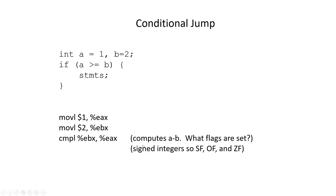Once I've got the results of this computation, that's enough to make a decision about whether I want to execute these statements or not. The command I need is actually jump less than. In C, if I'm writing 'if A is greater than or equal to B, then do these,' in assembly I'm going to be skipping instead of doing — so I need the reverse. I need 'if A is less than B, then skip down.' I put my label L2 here with a colon, and I'm using jump less than for L2. The question I want to ask now is: what flags got set, and what conditions need to be met for this jump to be executed?